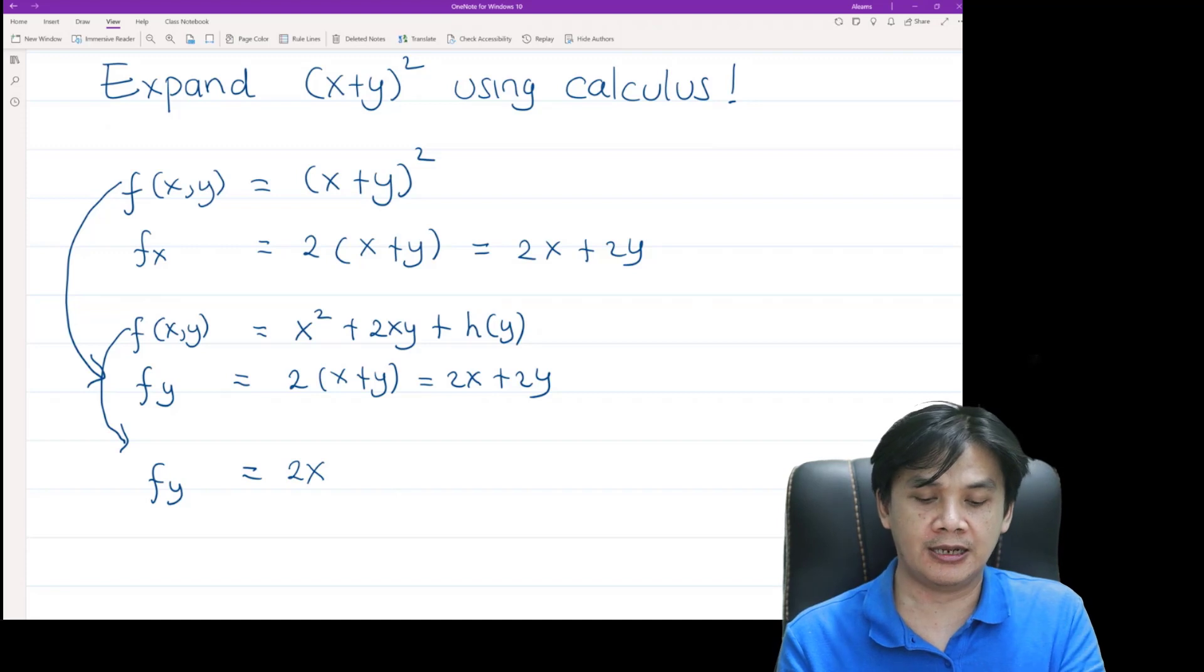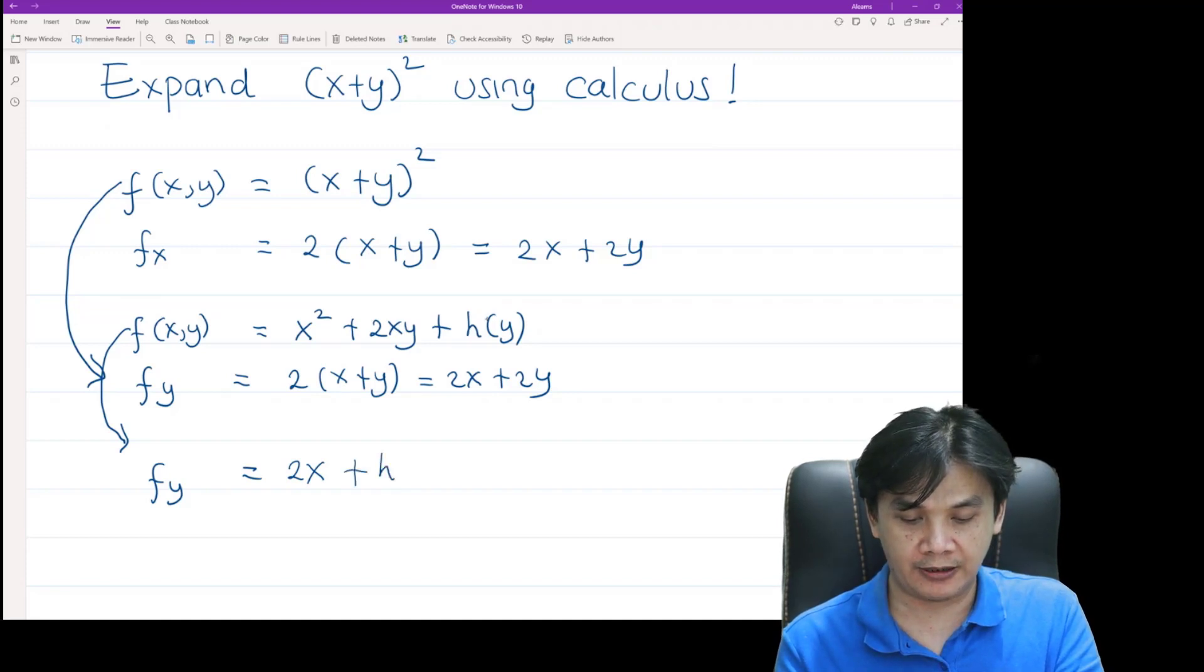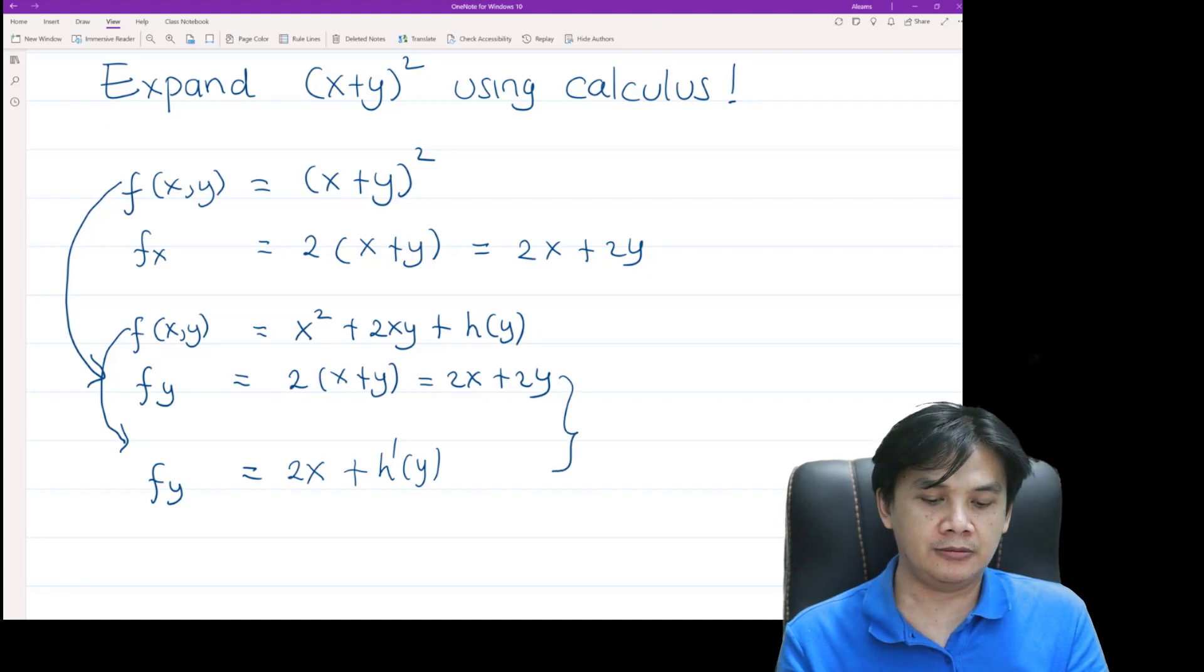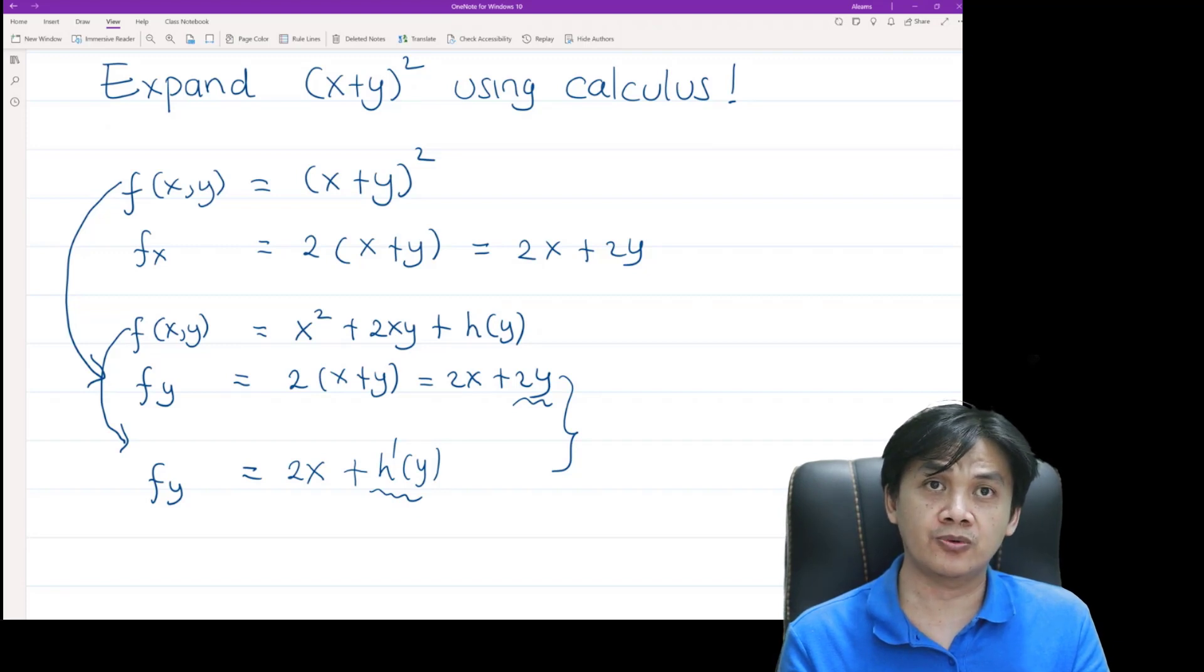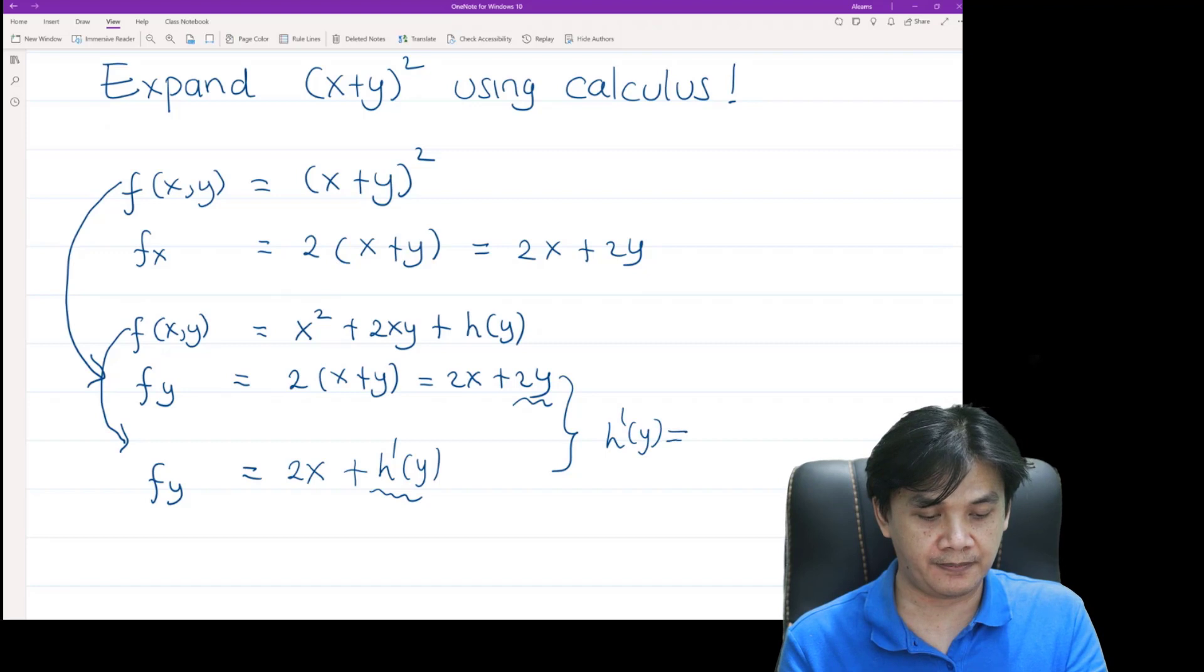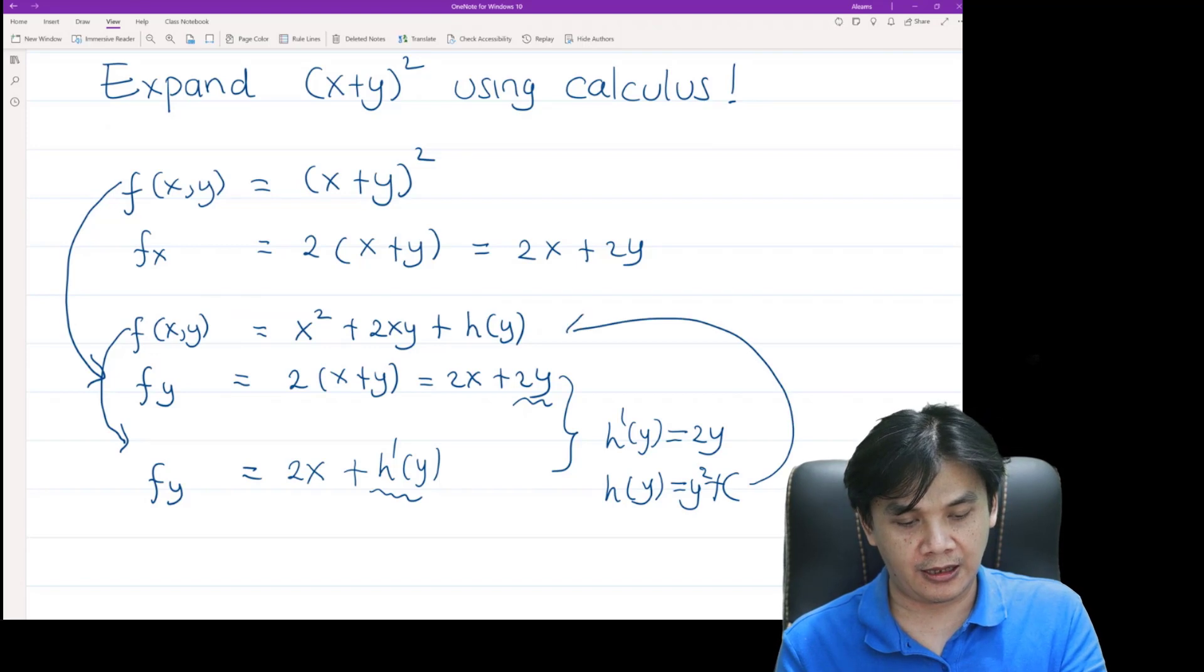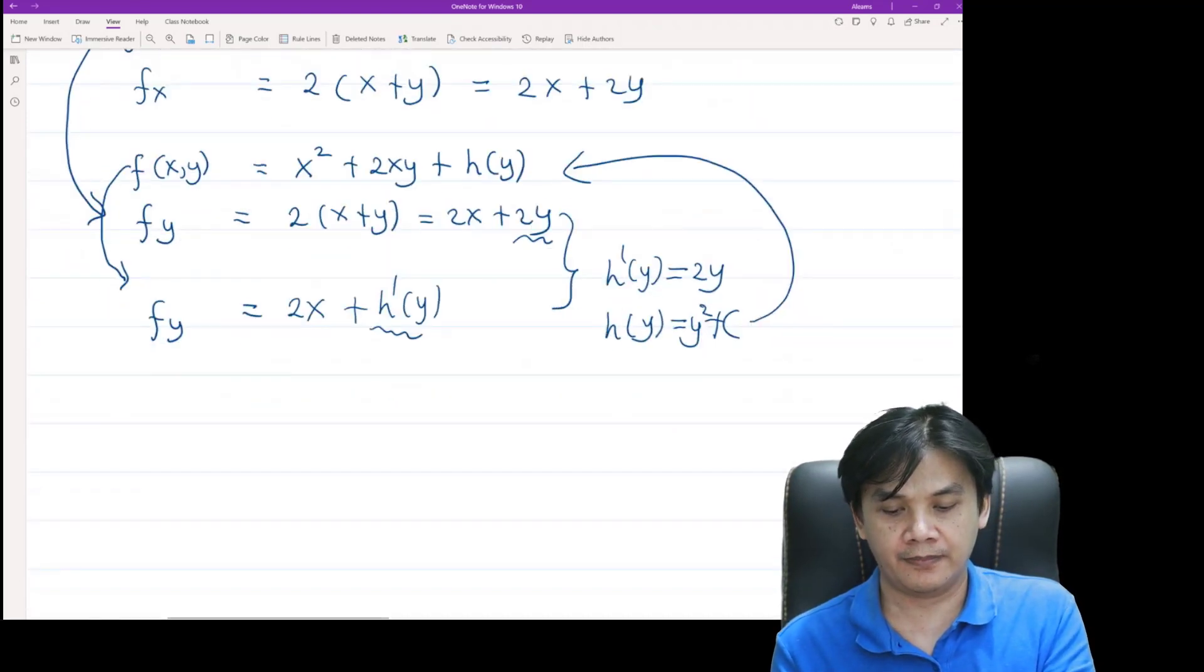Now we compare the two. Therefore, we need to conclude that h'(y) has to be equal to twice of y. So h'(y) is 2y, therefore h(y) is equal to y² plus a constant. And plug this back there...